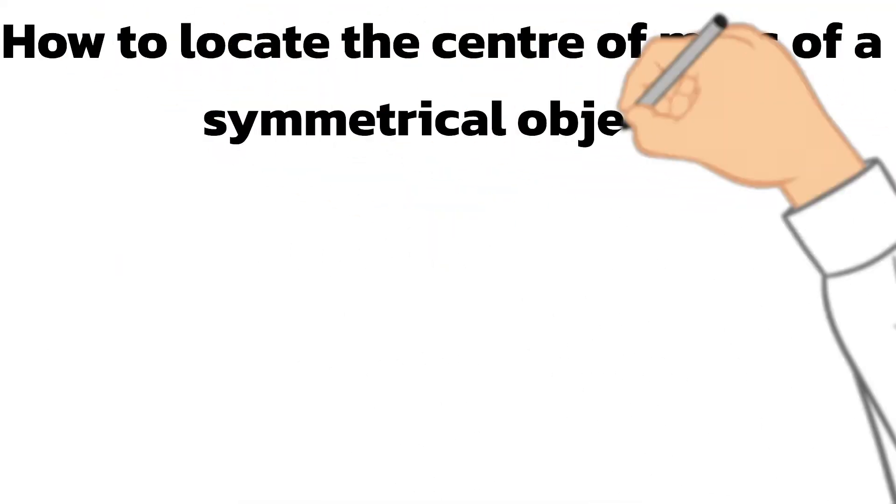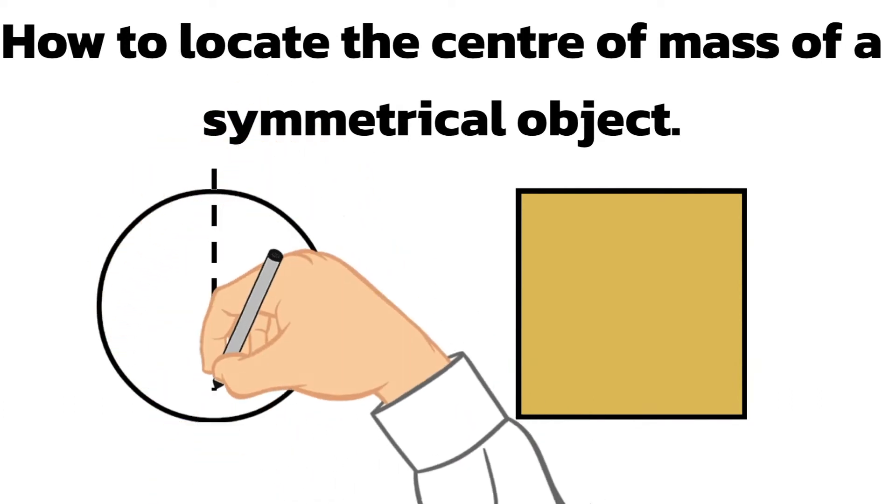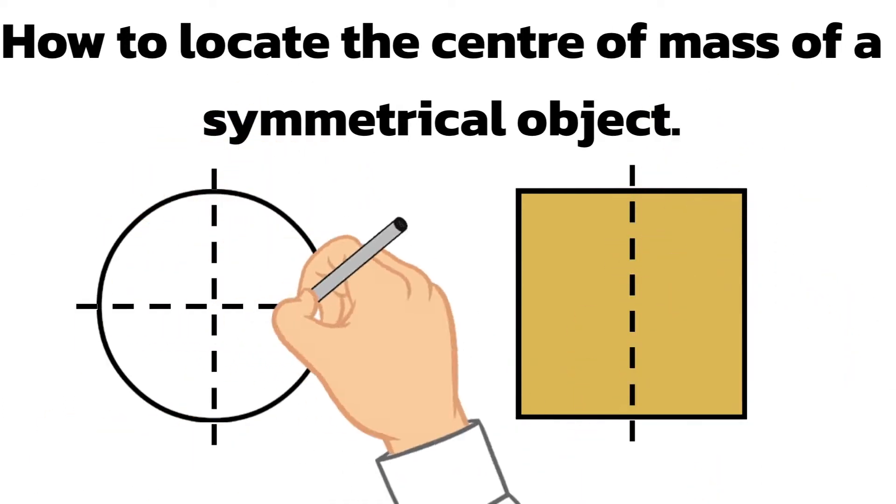To locate the center of mass of a regular shaped object like a flat circle, or square, we need to draw lines of symmetry. The position where the lines of symmetry cross is the center of mass of the shape.